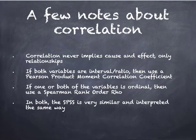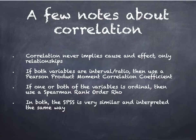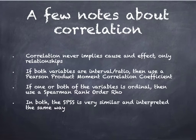A few notes about correlation. Correlation only looks at relationships, so it can never imply cause and effect. Moral disengagement doesn't cause an increase in red or yellow cards, and there could be some other factor at play that we're not measuring. If both variables are interval or ratio, then you're going to use the Pearson product moment correlation coefficient, or R. However, if one or both of the variables is ordinal, then you want to use the Spearman rank order rho. These are collected in the same way on SPSS. Spearman rank order rho is notated by R with a subscript S. They're both read the same way, look the same, and are interpreted as positive and negative relationships the same way.